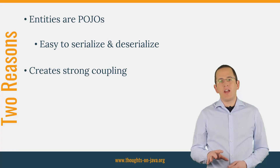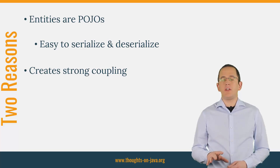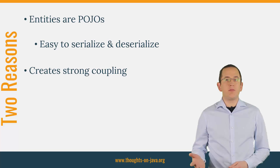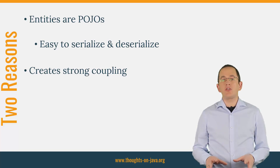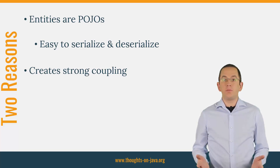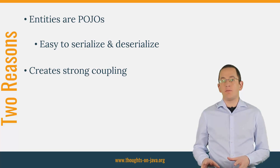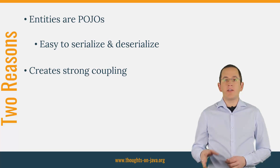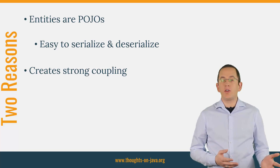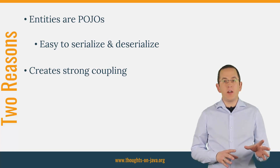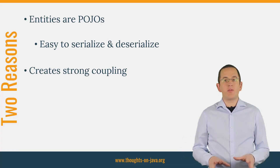I've seen both approaches in several projects and over the years I've formed a pretty strong opinion on this. Even though it's tempting to expose your entities, you should avoid it for all applications with at least mediocre complexity and for all applications that you need to support for a long time. Exposing your entities at your API makes it impossible to fulfill a few best practices when designing your API. It reduces the readability of your entity classes, slows down your application, and makes it hard to implement a true REST architecture. You can avoid all of these issues by designing DTO classes, which you then serialize and deserialize on your API. That requires you to implement a mapping between the DTOs and your internal data structures, but that's worth it if you consider all the downsides of exposing entities in your API.